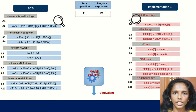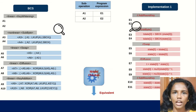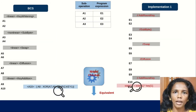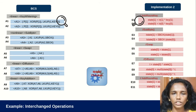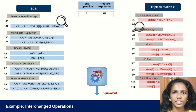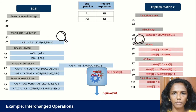Moving further, it goes to the next sub-operations and program expression and, with the help of the model checker, determines that they are equivalent. This continues until all sub-operations in BCS are mapped to program expressions. For implementation 2, where we have interchanged operations, starting from the first sub-operation and program expression, the model checker cannot find the mapping, so it goes to the next expression E2 and determines that A1 is equivalent to E2. Then it finds the mapping between A2 and E1.